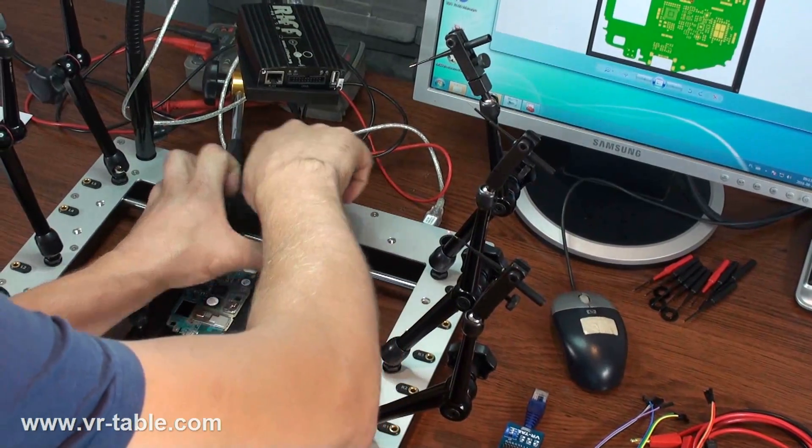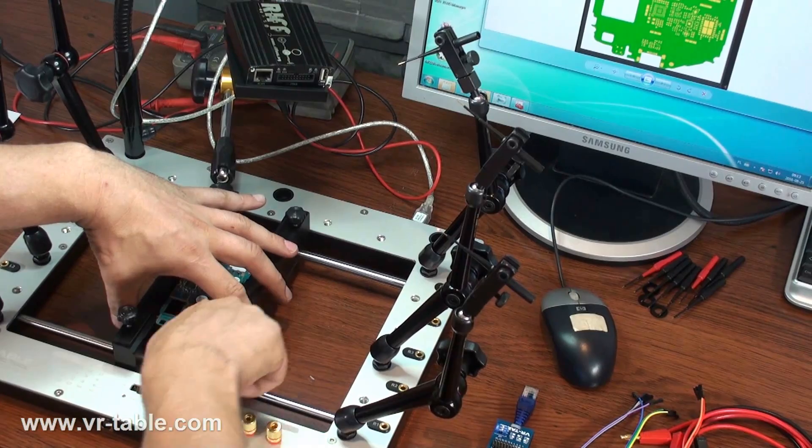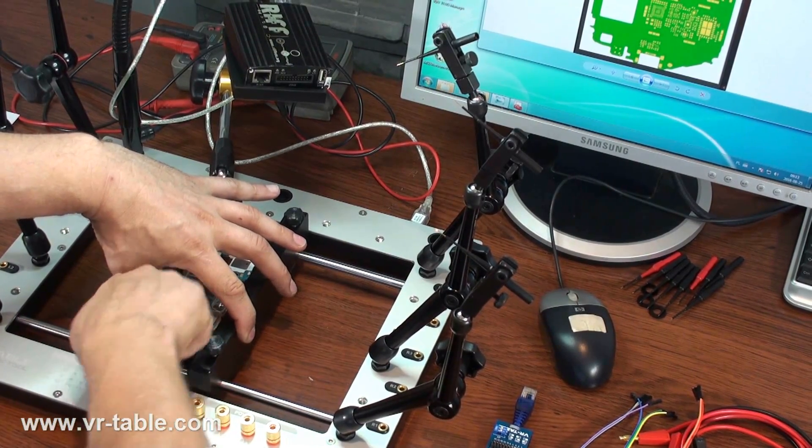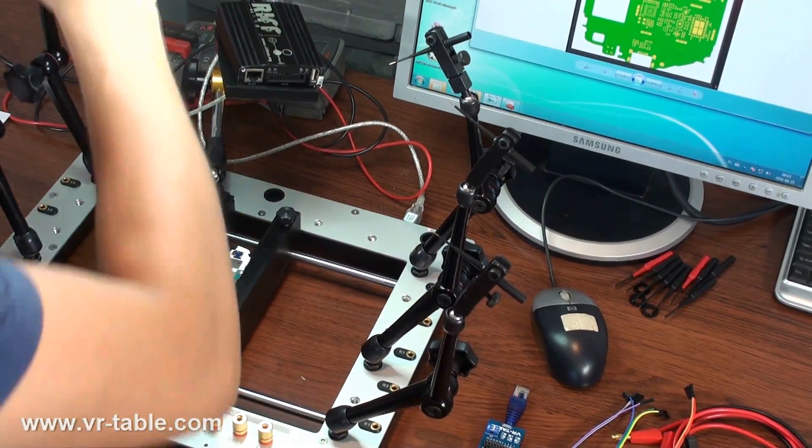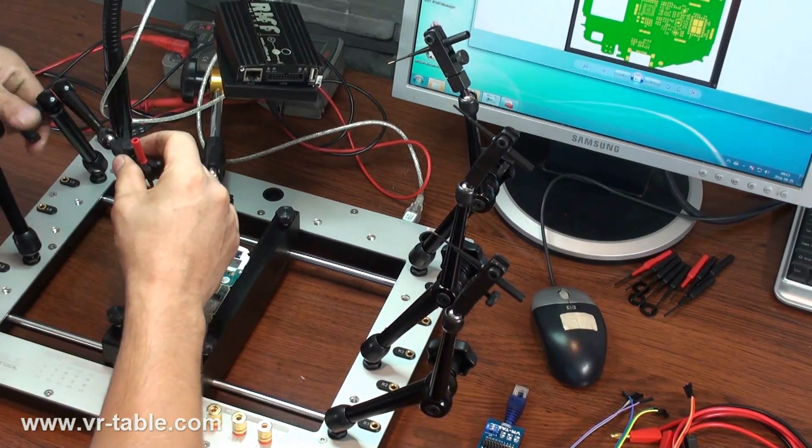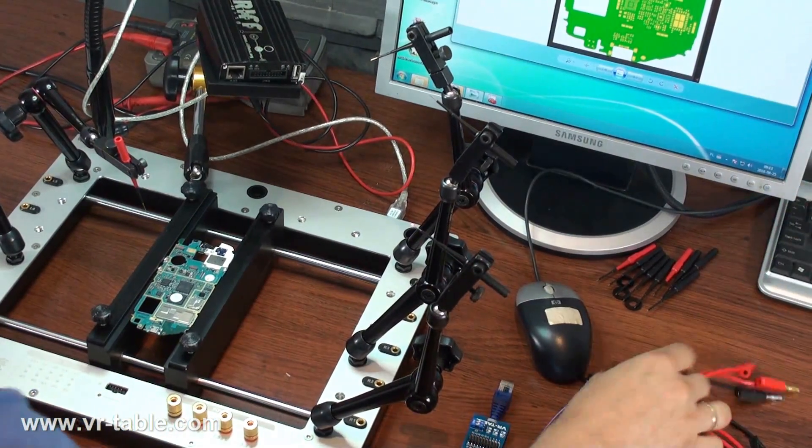For this operation we'll use a Riftbox, but we could use any other interface with an eMMC ISP connection. We will start by mounting the phone or device PCB into the holding tray and tightening the screws to prevent movement. This ensures that the PCB will not move while we connect the VR arms and probes.